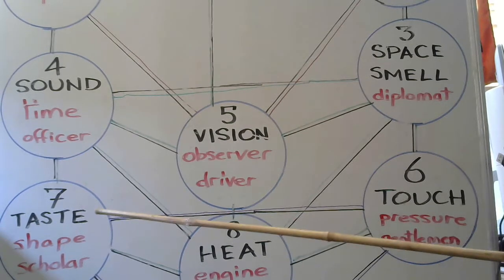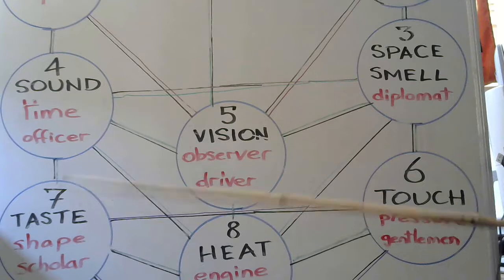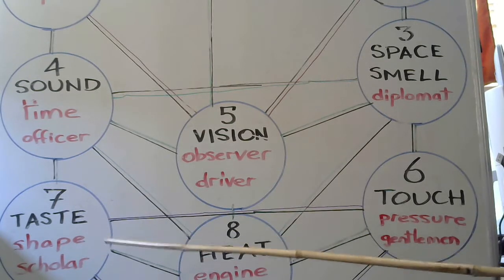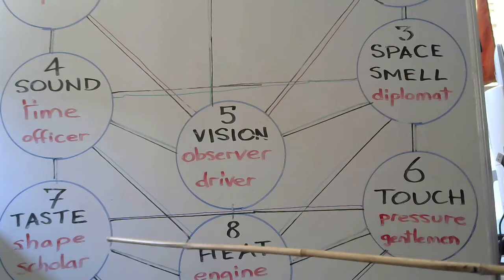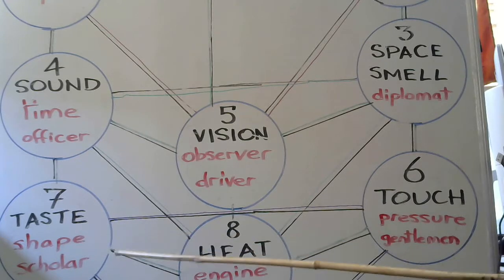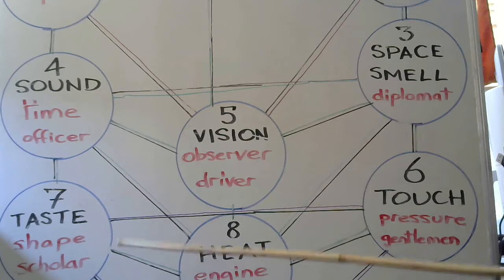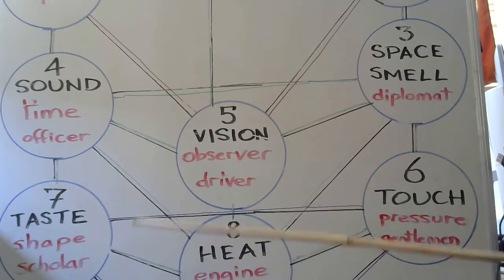53, 54. 53 is a fixed method, a pressure map, a shape which has a taste. It's a scholar who knows these shapes and tastes.